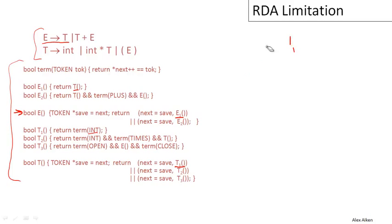So now let's consider a slightly more complicated example. Let's try the input string int times int. So again, we start with the production E, and the first thing we'll do is we'll try the production E1, same thing we did last time. E1 is going to call the function T, and T is going to try the first production for T, which again is the production int.